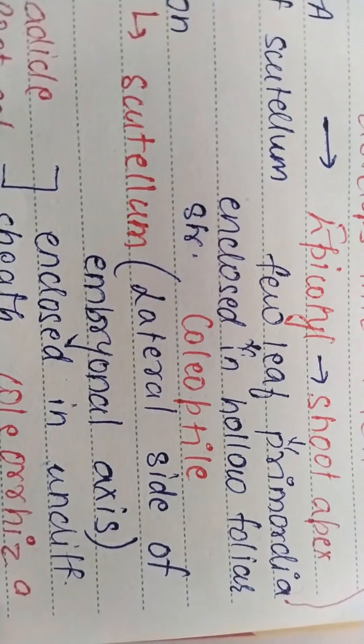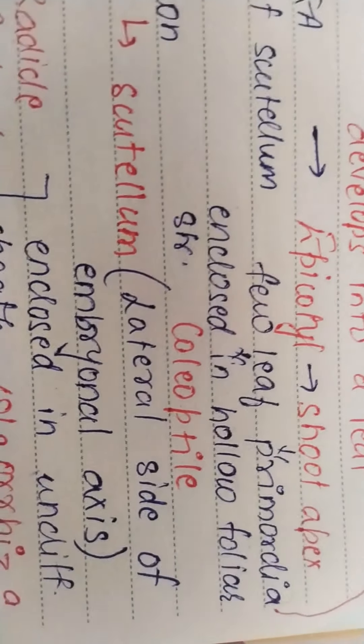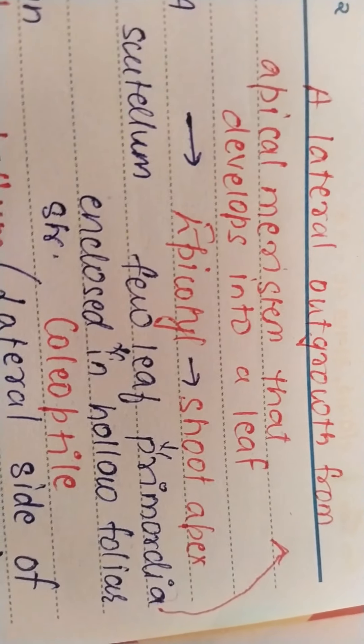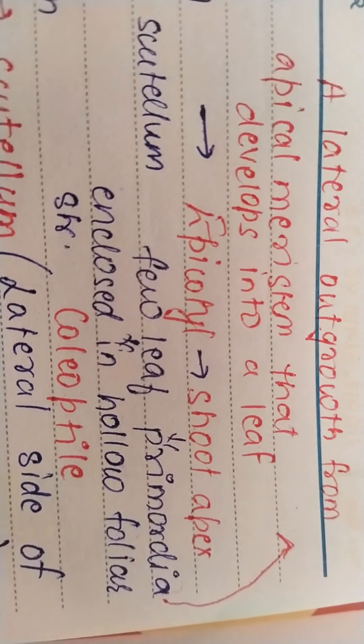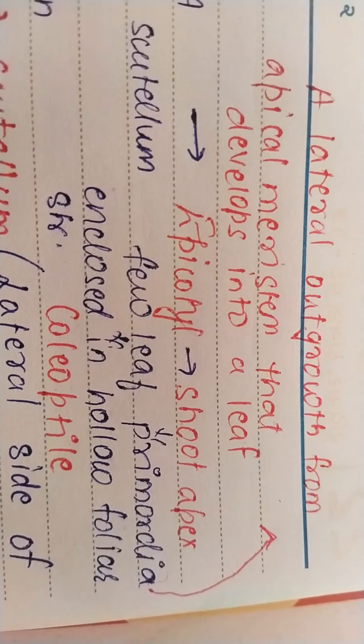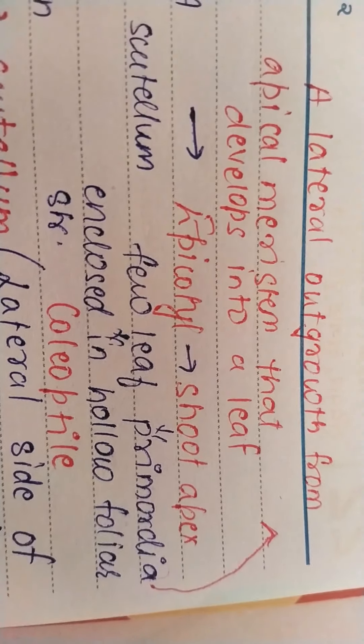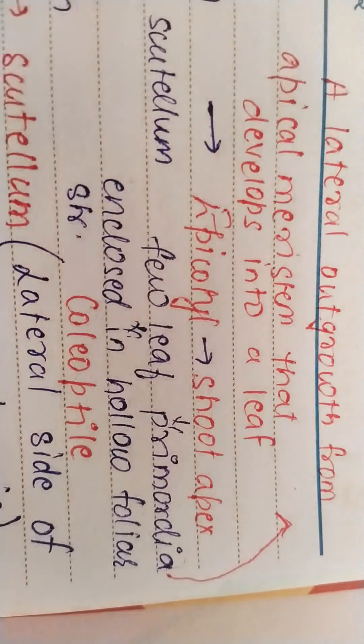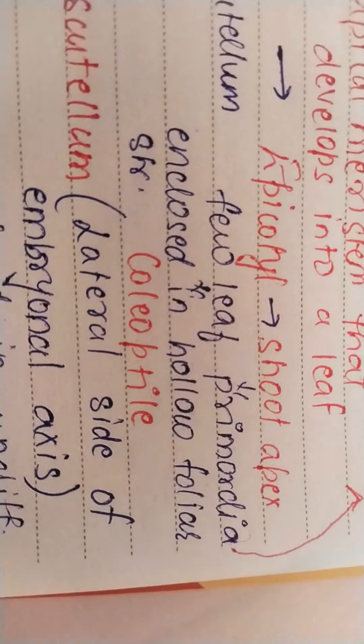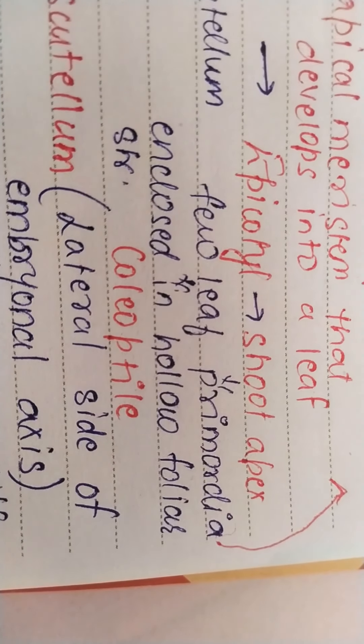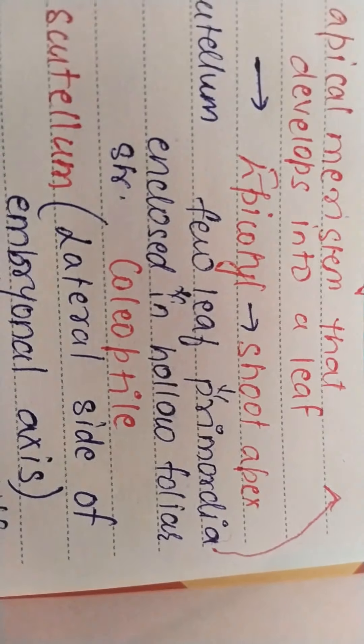When I say few leaf primordia, what is primordia? It is a lateral outgrowth from apical meristem that develops into a stem. So they are nothing but the structures which are going to form leaves, and that is why they are enclosed in foliar, foliar means leaf-like, structure.